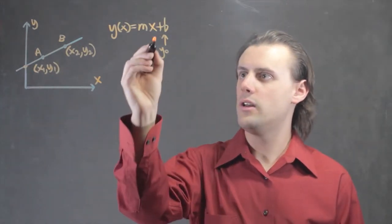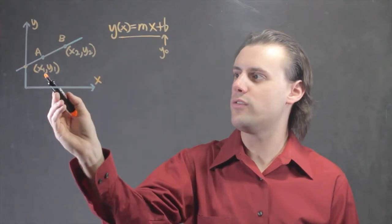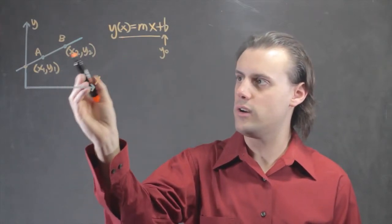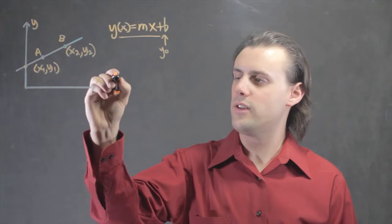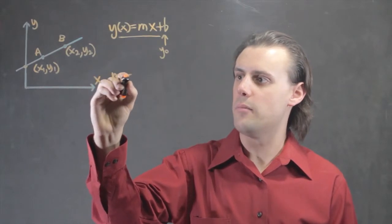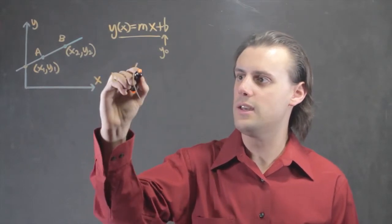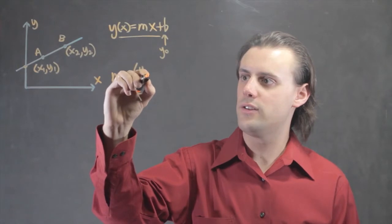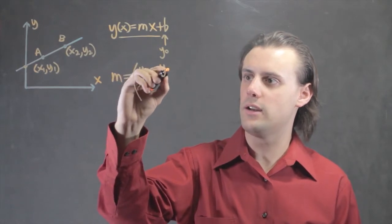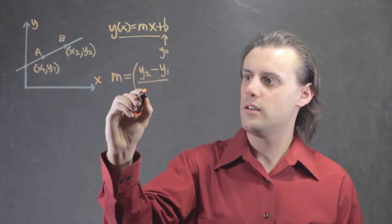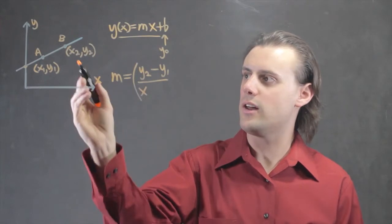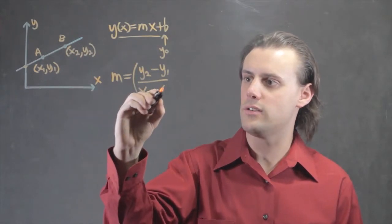In order to derive this in terms of the set of coordinates, I first have to calculate the slope m, which in this case will be equal to the difference in the y values, y2 minus y1, divided by the difference in the x values, x2 minus x1.